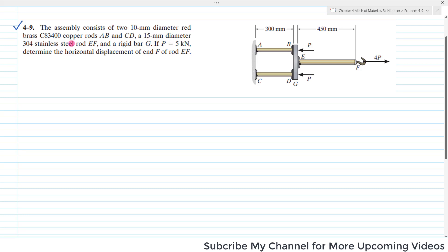A 15 mm diameter 304 stainless steel rod EF and a rigid bar G. EF is stainless steel rod and G is a rigid bar. If P equals 5 kN, determine the horizontal displacement of end F of rod EF. Let's start with the solution.